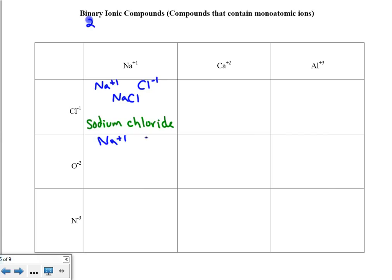Na⁺¹ and oxide is O⁻². If I crisscross, this 2 is going to be the subscript next to the sodium. The charge on the sodium implies that I will only need one of the oxide ions. So you need 2 of the positive 1 ions to match up with 1 of the negative 2 ions. This compound is called sodium oxide.